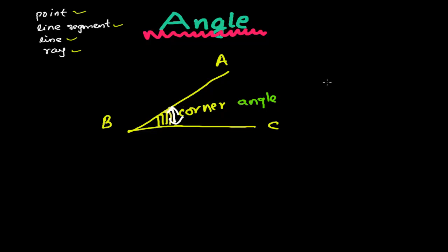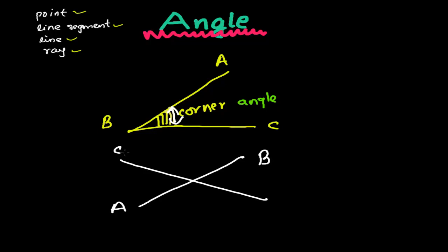Suppose I have two line segments: one is AB and another is CD. When AB and CD intersect, we again get the formation of corners — and those corners are angles.